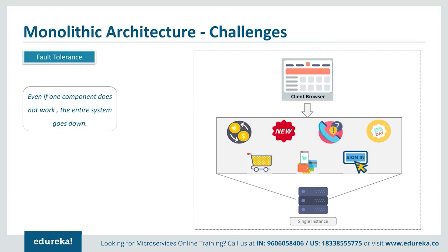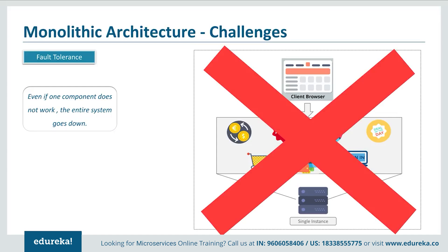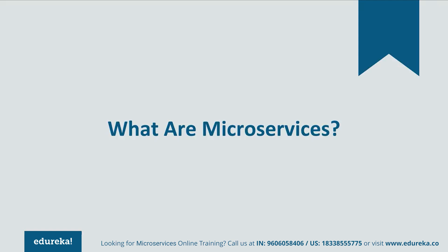The third challenge is fault tolerance. Consider your shopping cart application — even if one feature of the application doesn't work, the entire system goes down. This not only creates a problem for the users, but also for the developers as they have to rebuild it again. So to avoid these challenges, developers decided to shift from monolithic architecture to microservices.